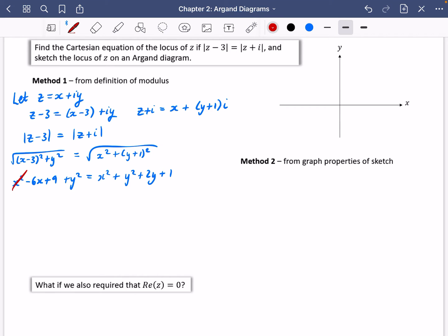And again, the X squareds will cancel and the Y squareds will cancel, which is expected because we're coming up with the equation here of a straight line. So we don't really want to see any squared terms, do we? We want it just to be X and Y terms.